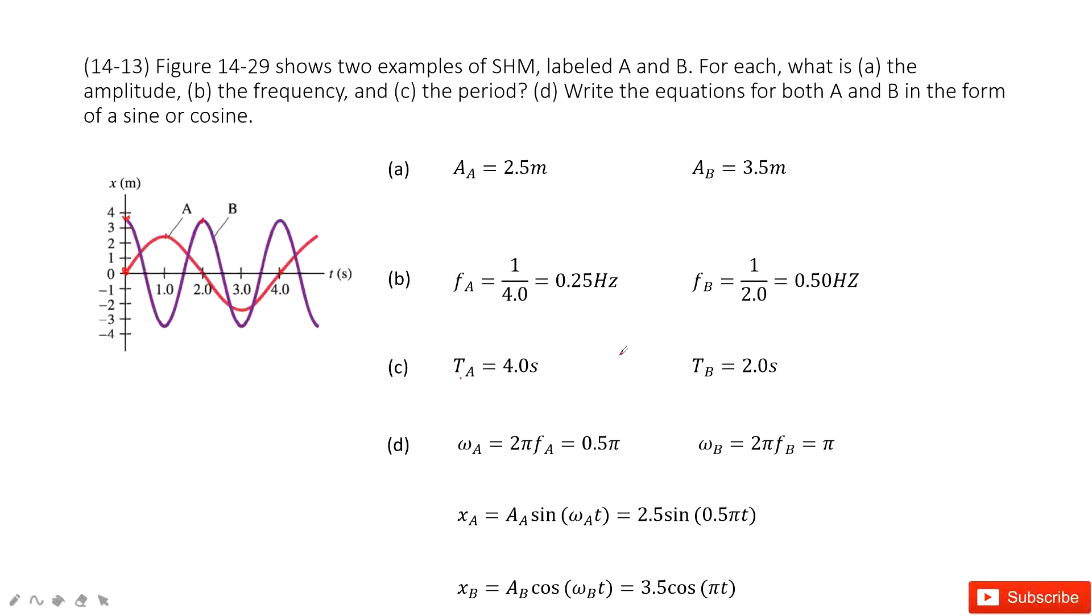Next we need to write the equations for A and B in sine or cosine. First look at A. It starts from zero. Of course it's sine. And B starts at the peak. Cosine.